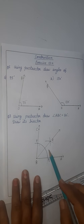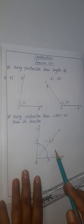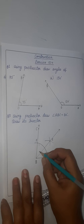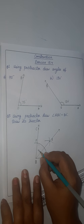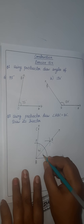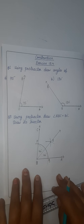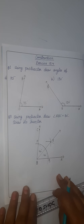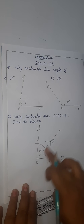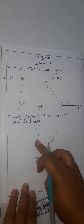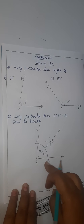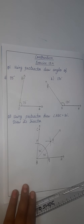The total angle is 80 degrees. So this one is also 40 degrees and this one is also 40 degrees. The angle bisector divides an angle into two equal parts.